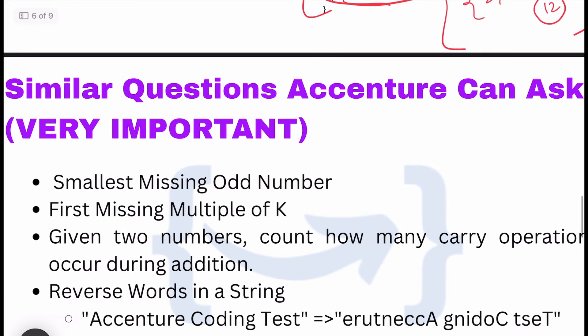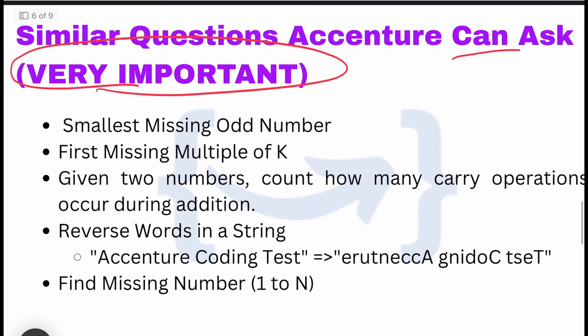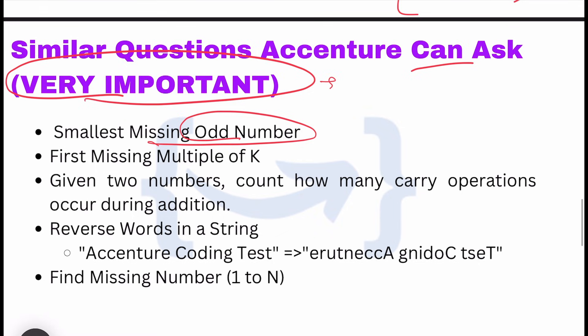Similar questions Accenture can ask - very important. This is the specialty of Prime Coding: we provide other questions so you won't be clueless after this video. Smallest missing odd number - try to perform with the same problem statement. If you're confused about the problem statement, copy these questions from the screenshot.